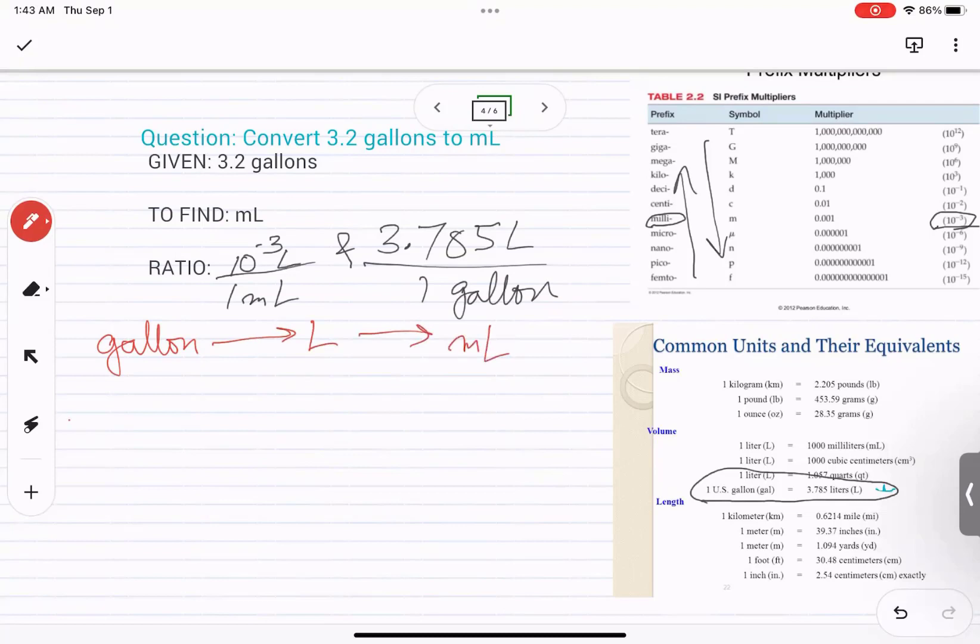So we will start with 3.2 gallons. All the rest are going to be ratio. So our final answer should have two sig figs.